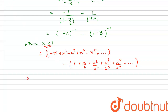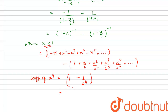From these two expansions, we can identify the coefficient of x to the power 4. It is 1 from the first expansion, minus 1 over 2 to the power 4, which is 1 over 16, from the second expansion. So the coefficient of x to the power 4 equals 1 minus 1/16, which gives 15 over 16.